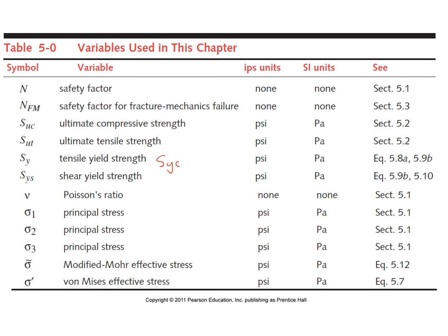Typically speaking, we can also call this SYT — our yield strength in tension. For even materials, these will be equal, so sometimes they'll just be called SY. We also want to discuss our principal stresses, as well as our von Mises effective stress.